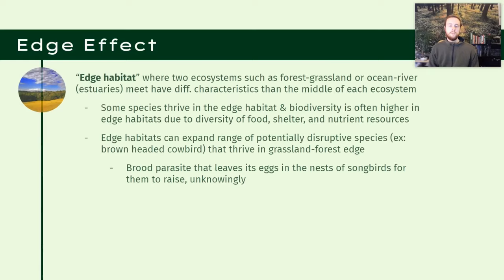Next, let's talk about the edge effect. The edge effect occurs when two adjacent ecosystems meet. This edge habitat has unique conditions because it combines conditions of both adjacent ecosystems — such as where prairie meets forest, or where the ocean meets the mouth of a river, which we'd call an estuary. Typically, edge habitats support higher biodiversity because organisms have access to the resources and food supplies of both ecosystems. However, edge habitats often allow for the expansion of certain species uniquely adapted to those habitats, which can come at the expense of other species.